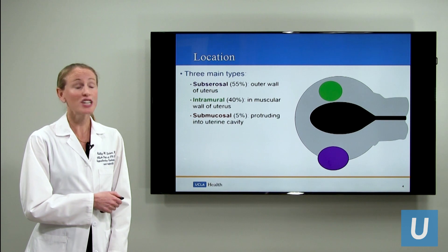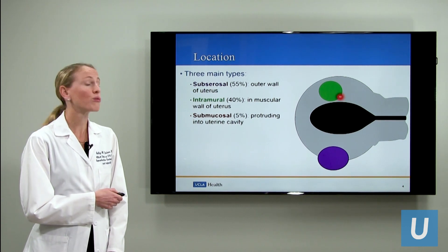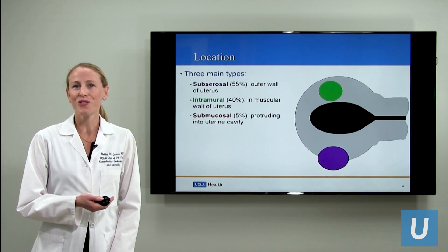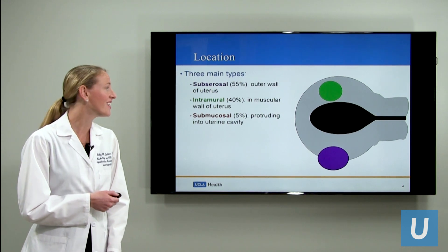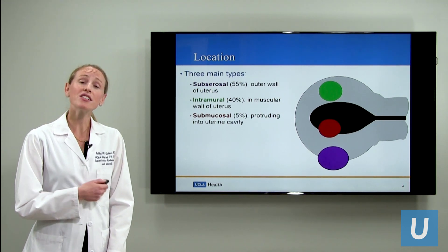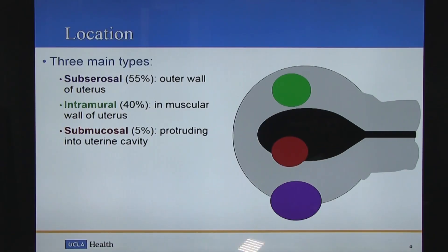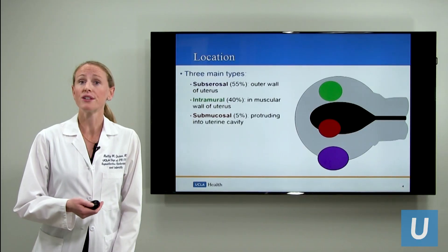The second is an intramural fibroid, arising from within the wall of the uterus. And then finally, the least common but most impactful type of fibroid is a submucosal fibroid. This protrudes into the uterine cavity where pregnancy would develop.